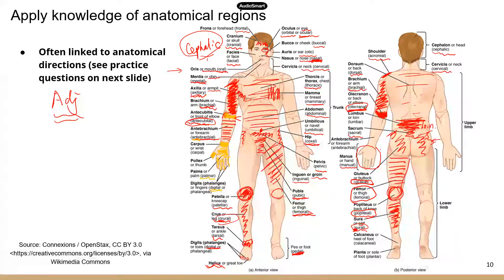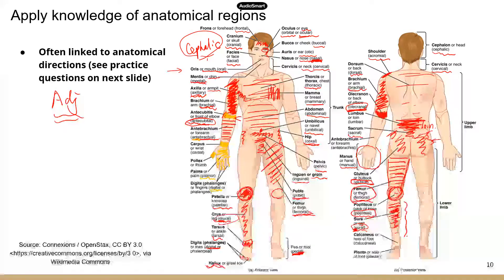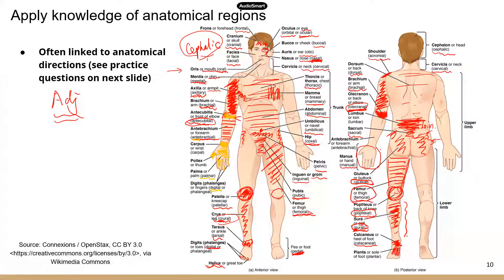For the posterior thigh, it's still femoral. The back of the knee is popliteal. The back of the leg — the calf area — is sural: crural is the front of the leg, and sural is the back, which is the calf. Calcaneal refers to the heel of the foot. Plantar refers to the sole of the foot.